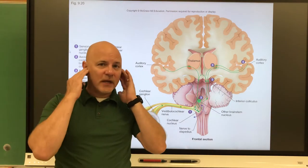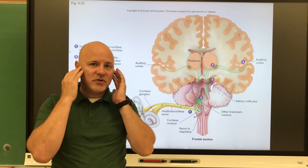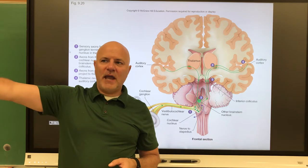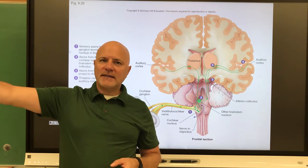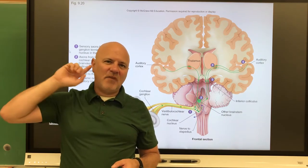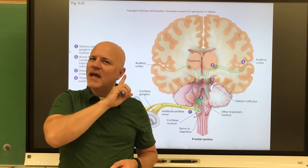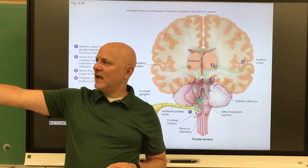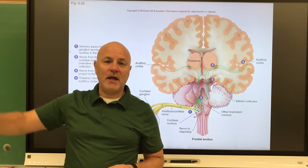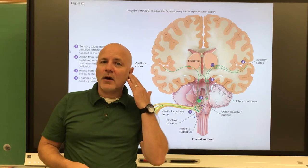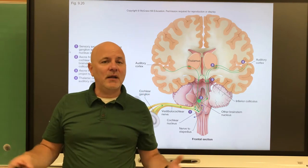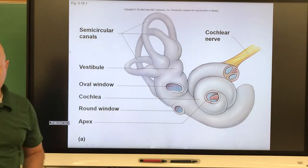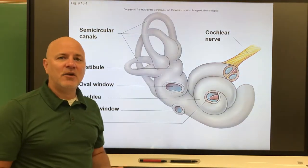One of the important things about having two ears is that it allows for triangulation. If I hear a sound that came from over there, that sound is going to hit my right ear slightly ahead of my left ear, which tells me the direction the sound came from. If you only hear out of one ear, you don't have the ability to triangulate and don't know where the sound came from.